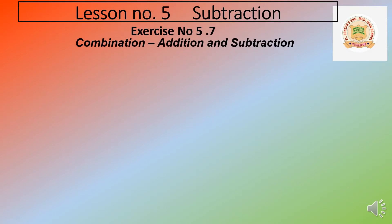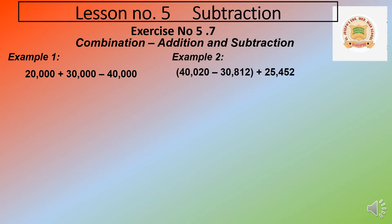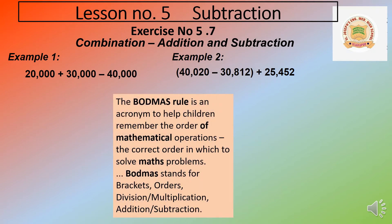Exercise number 5.7 — combination of addition and subtraction. In one question we are having both addition and subtraction. In another example, there is also a bracket, where we have subtraction inside the bracket and addition afterwards. To solve these kinds of questions, we use the BODMAS rule. BODMAS is the easiest method to remember the order of mathematical operations — the correct order in which we have to solve maths problems.